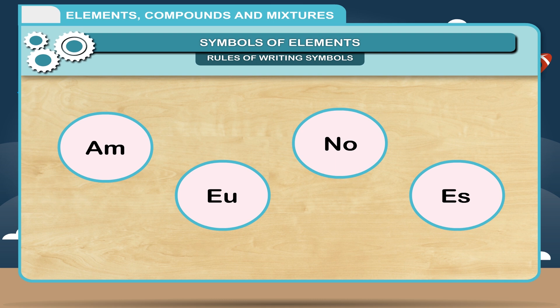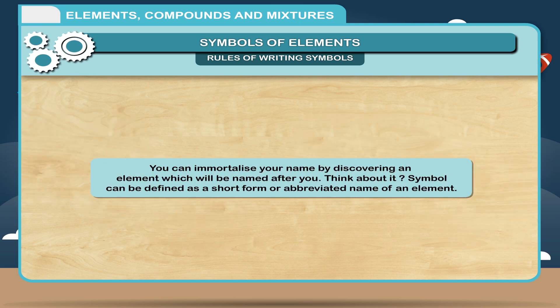Some elements are named after the country from where they were discovered or after the person who discovered them. Americium and Europium are named after the country where they were discovered, but Nobelium No and Einsteinium Es have been named after the scientists who discovered them. You can immortalize your name by discovering an element which will be named after you. Think about it.